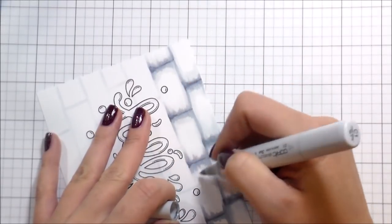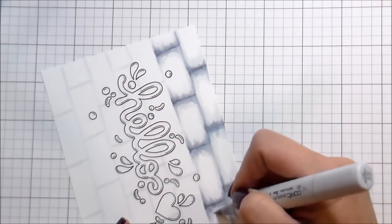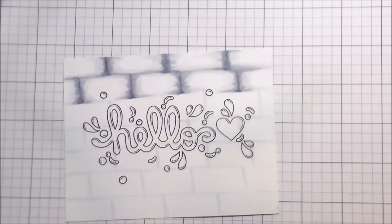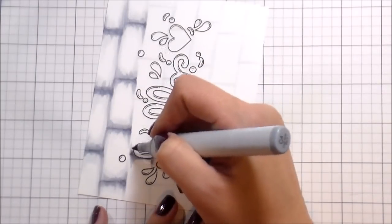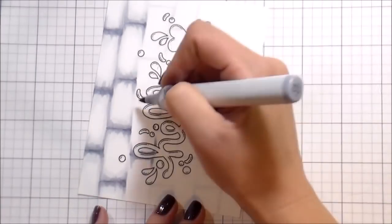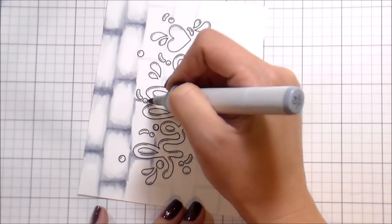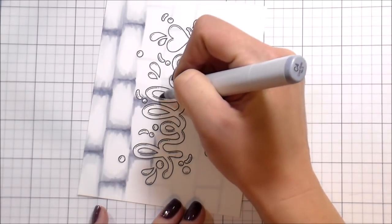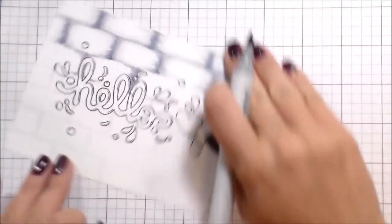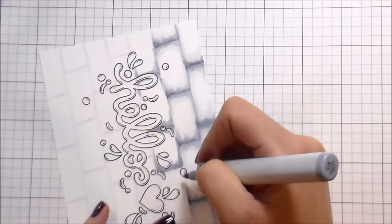For the bricks I'm just freehanding this. It doesn't have to be perfect - it's not the focal point of the card, just the background to give it that scene feel. I just used my lightest marker, the C1, to lightly sketch the brick pattern. I'm not super concerned about drawing right over the stamping because the colors I'm using are dark enough to cover up a C1.